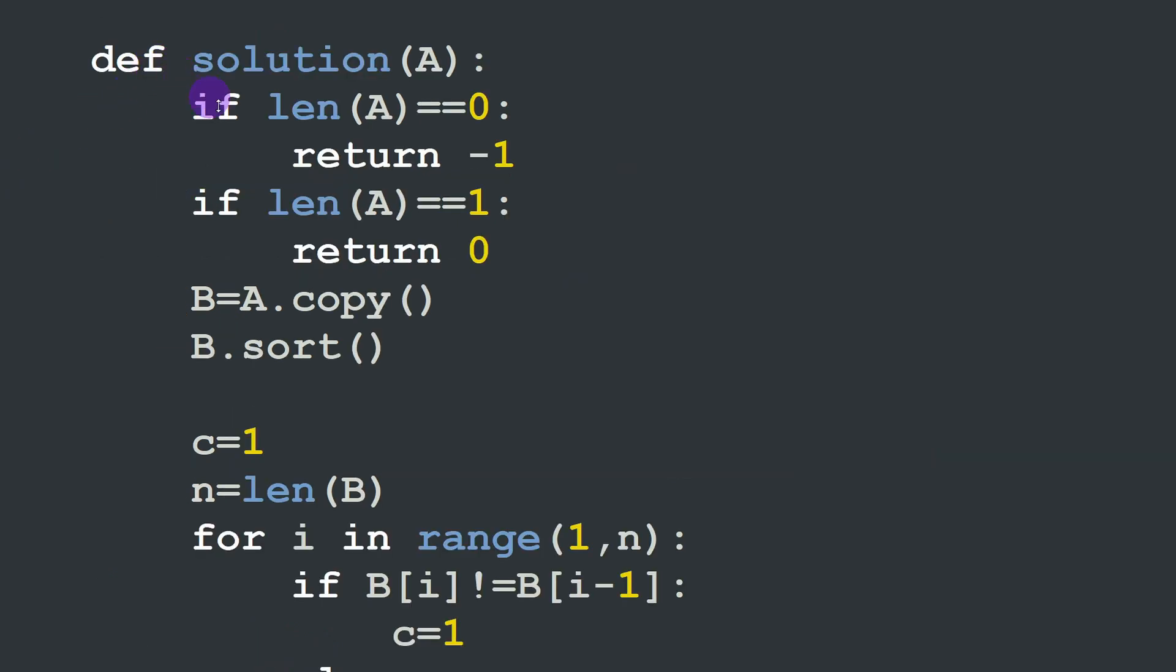In Python it's the same procedure. We are going to start by the edge cases. If the length of A, the list A, is equal to zero, then we should return minus one. There is no dominator element in an empty list. But then if the length of A is equal to one, so it's only one element, we have to return zero because it's the only element in the list and therefore it's the dominator of the list.